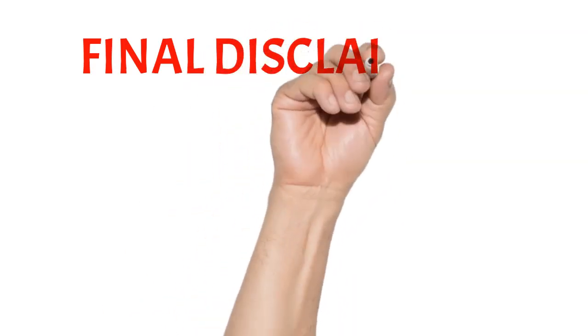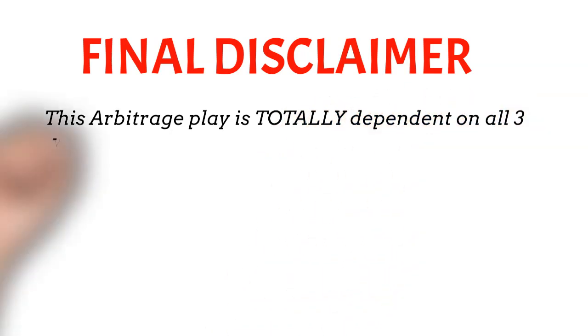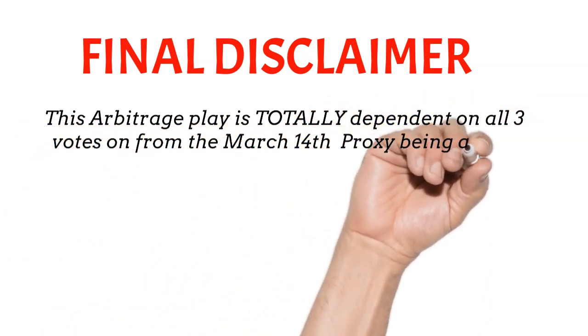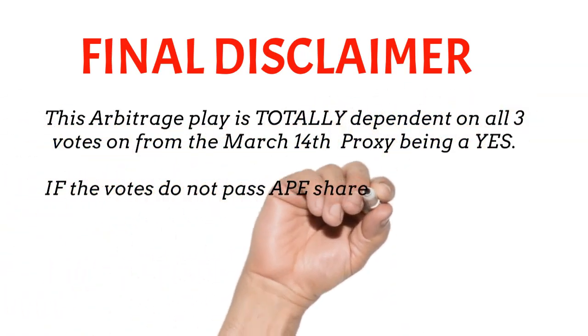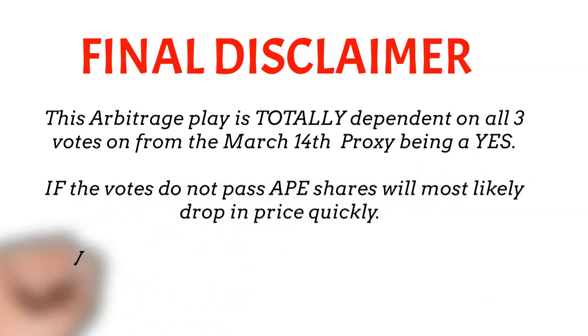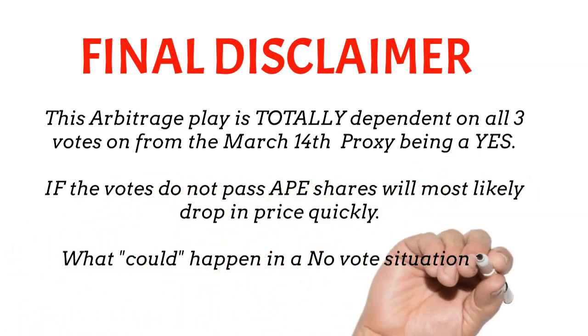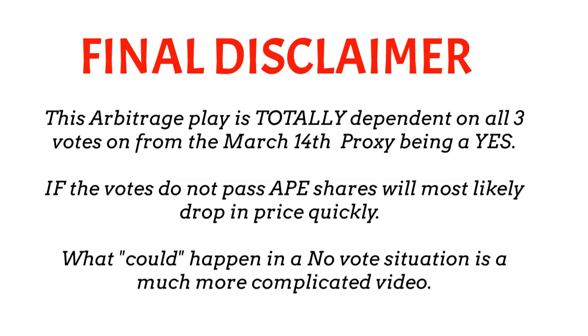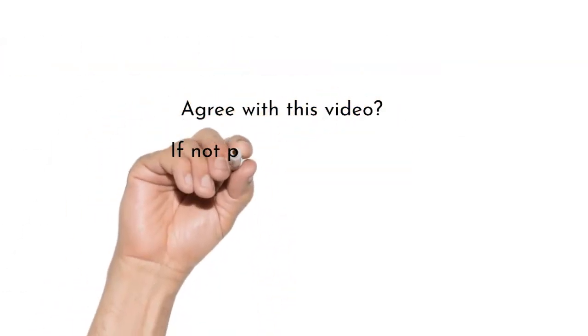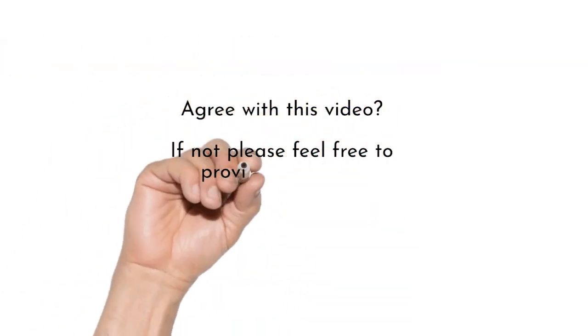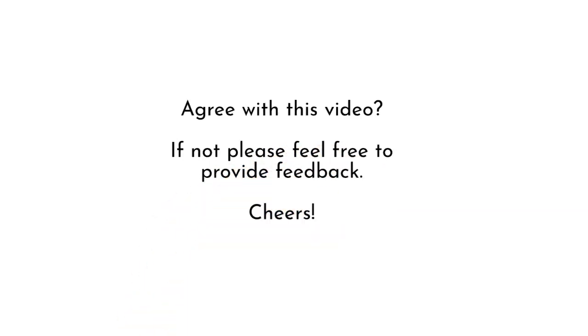Let me be crystal clear. This arbitrage play is totally dependent on all three votes from the March 14th proxy being a yes. If the votes do not pass, Ape shares will most likely drop in price quickly. What could happen in a no vote situation is a much more complicated video. If there is a strong demand, and if I have the time available, perhaps one can be created before March 14th. Do you disagree? Do you see any issues with the math or logic? Please drop a note if you do. Cheers.